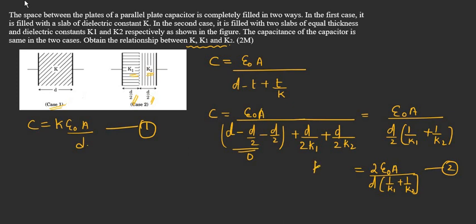We will be getting k into epsilon 0 A by d which is equal to 2 into epsilon 0 A by d. Let us cancel the common terms. We get k is equal to 2 divided by 1 by k1 plus 1 by k2. Once you simplify this, we will be getting 1 by k1 plus 1 by k2 will be equal to 2 by k.